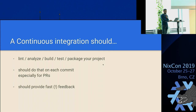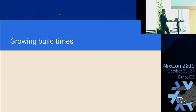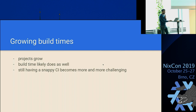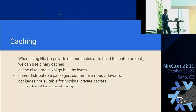With a small project that's not so much a problem, but as projects grow, build time likely does as well. So still having a snappy CI becomes more and more challenging. And when using Nix to provide those dependencies or build the entire project, you can make use of binary caches.